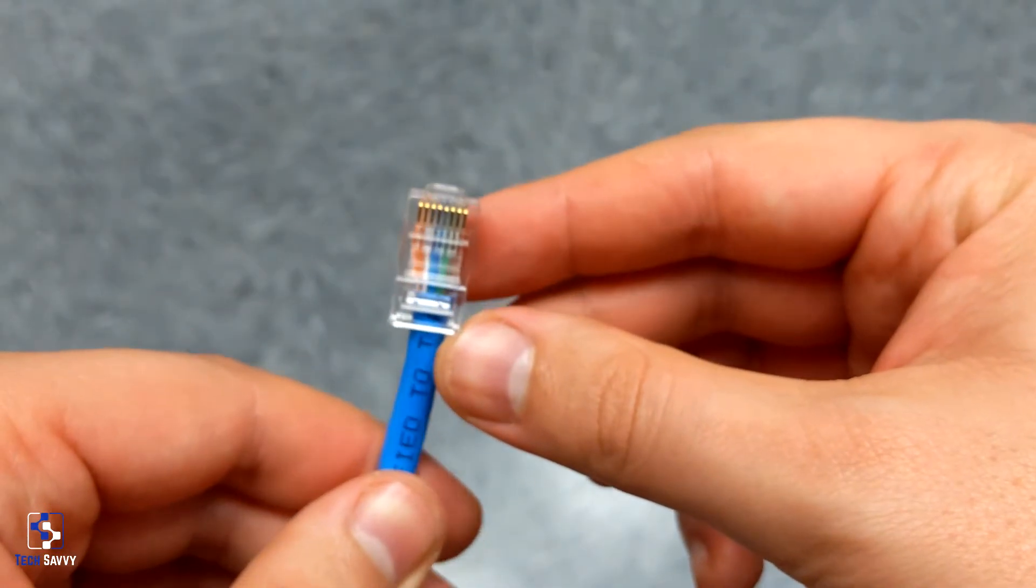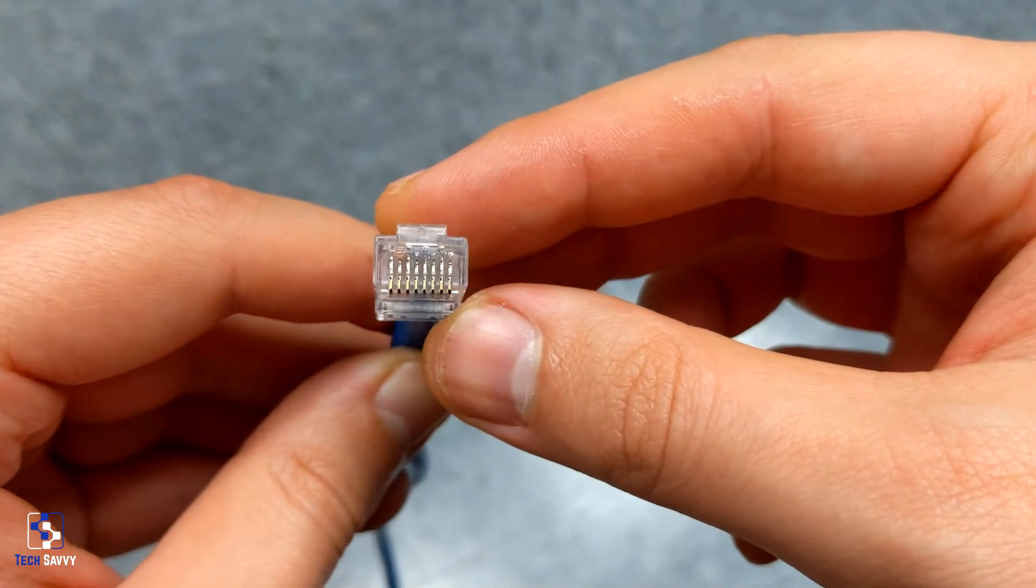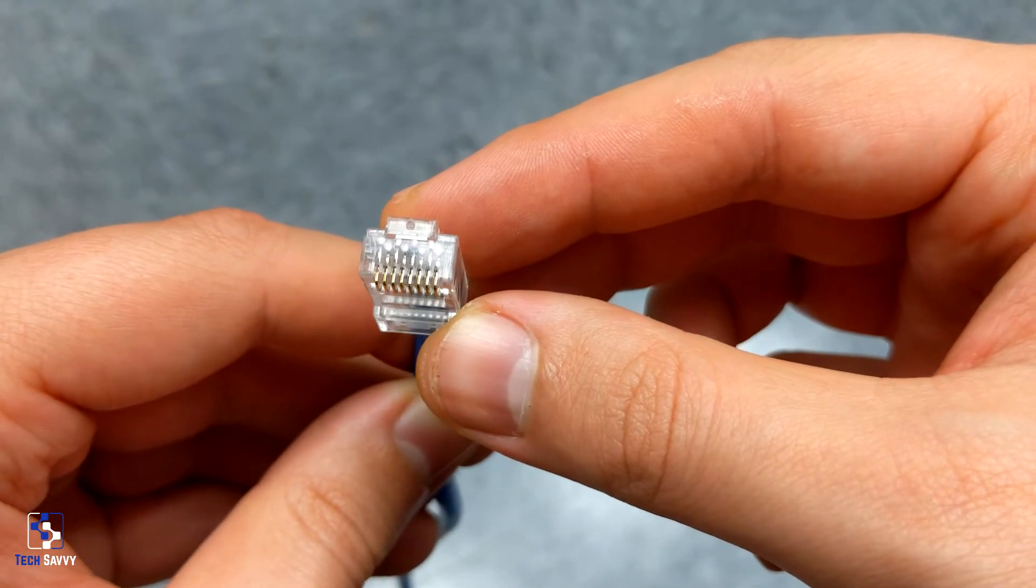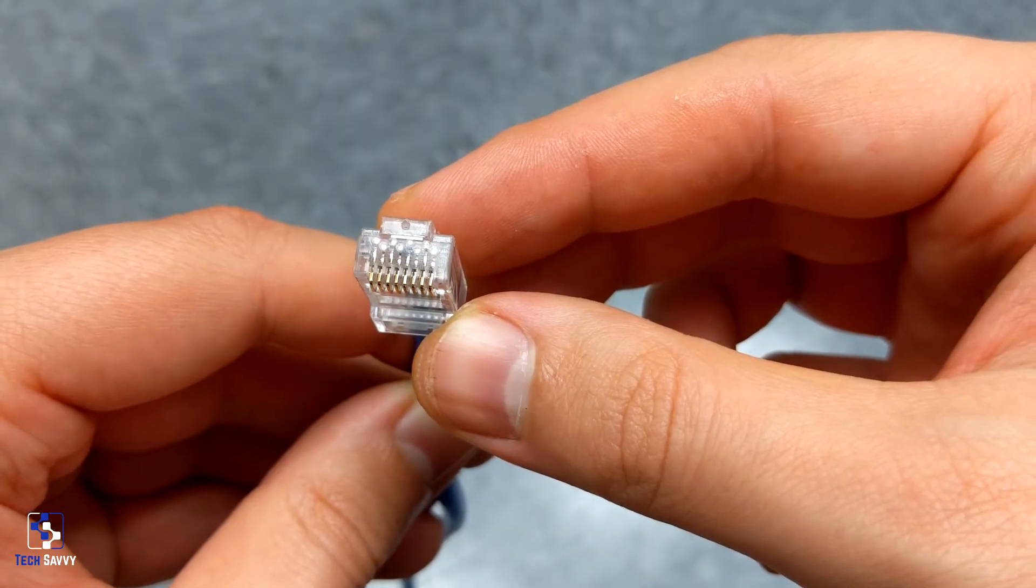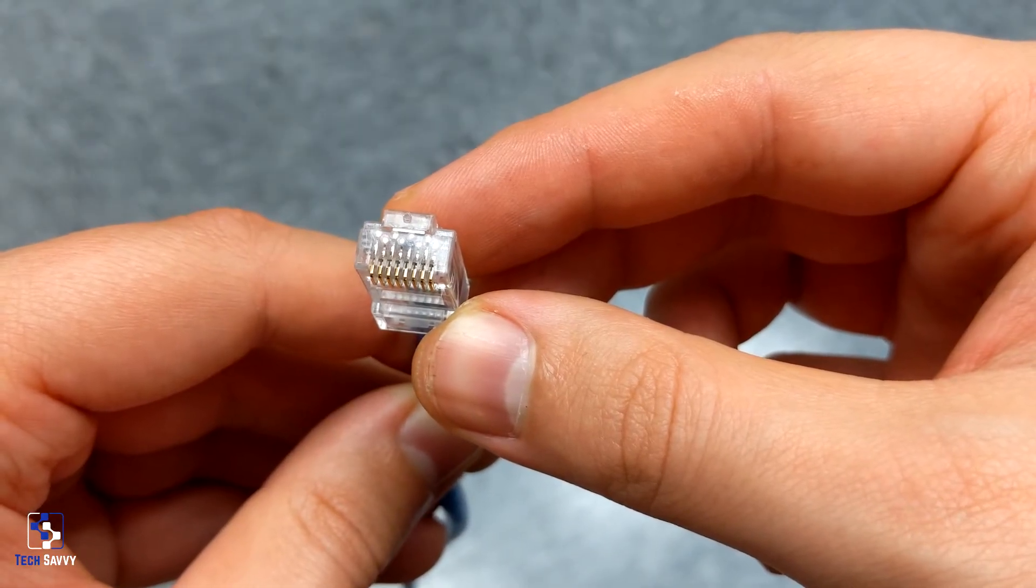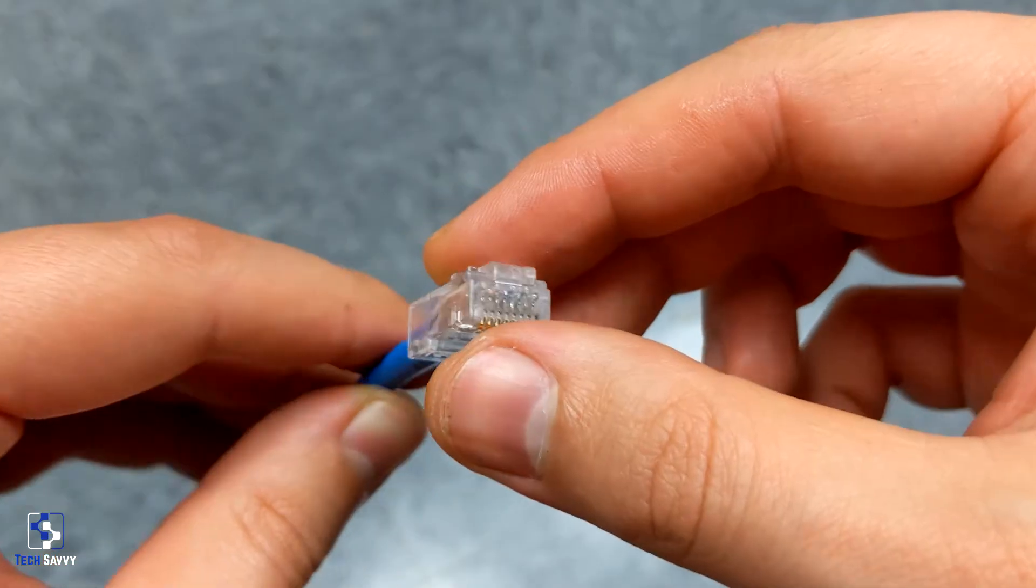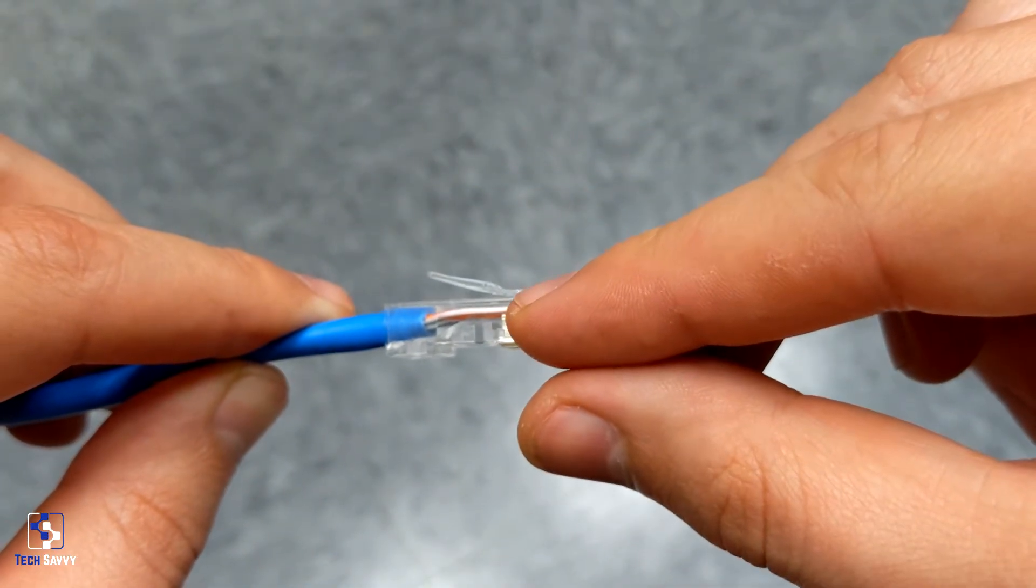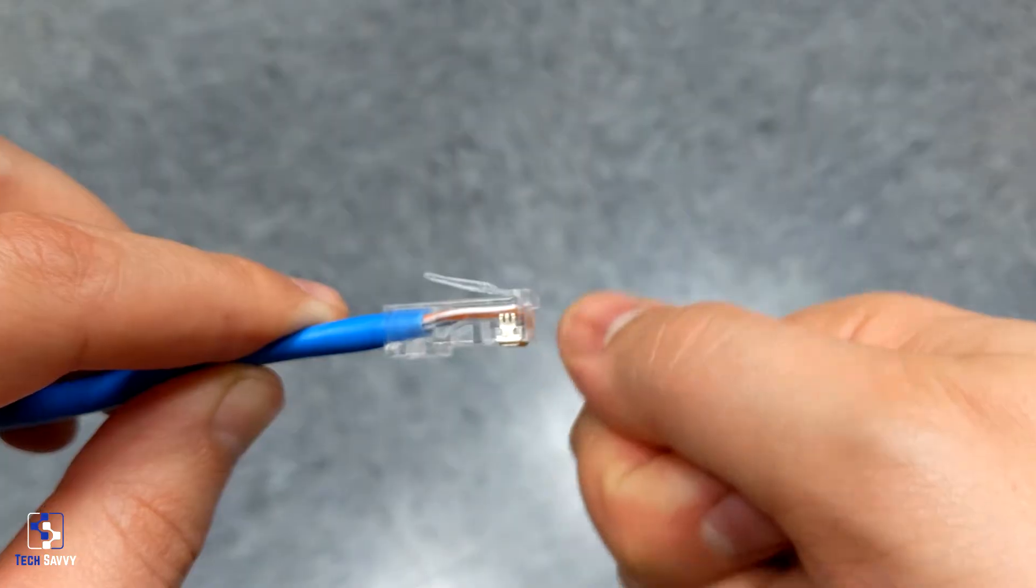Now I'm just going to check to make sure all of our conductors are in position. I do see all eight pushed up against the end of the jack, which is important. We want to make sure those teeth, those metal teeth, pierce those conductors when we crimp it.